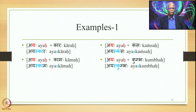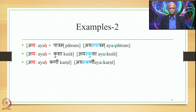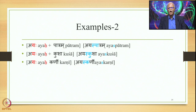In all four cases, Ayaha is the Purvapada and the Visarga is part of it, not an Indeclinable, and followed by Kama, Kamsa, and Kumbha. Additionally: Ayaha plus Patram → Ayas Patram; Ayaha plus Kusa → Ayas Kusa; Ayaha plus Karani → Ayas Karani.